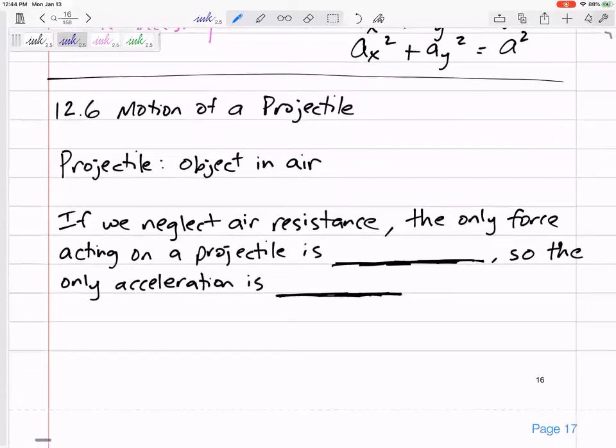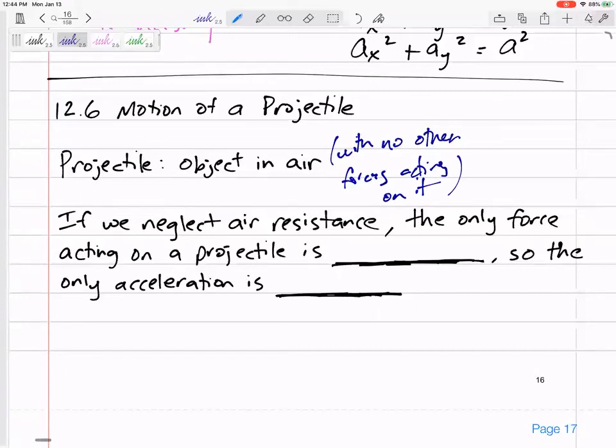So very common, and we're pretty much only going to focus on projectiles for these two-dimensional problems. So projectiles, an object in air with no other forces acting on it. So no thrust, no wind, no air resistance. It's just passively flying through the air or falling or rising.